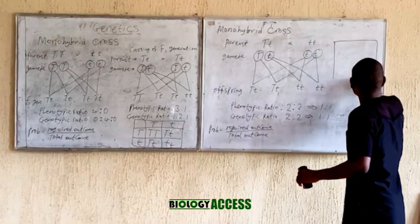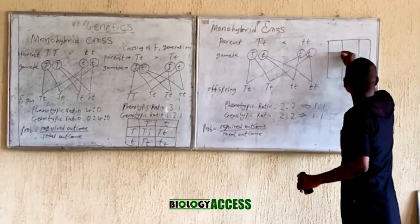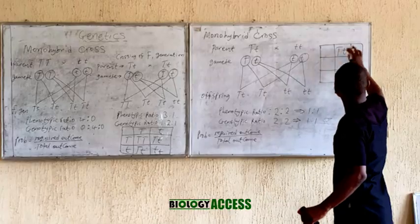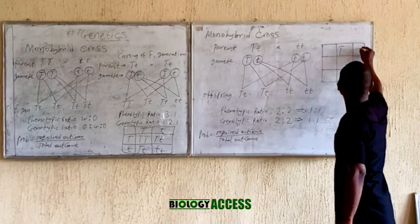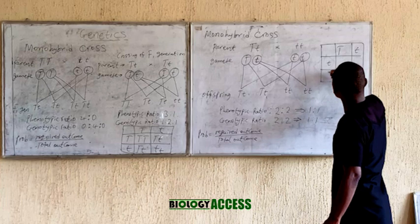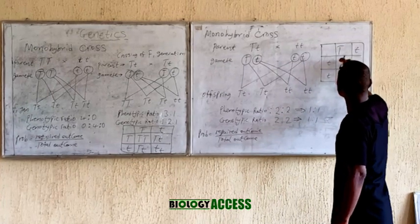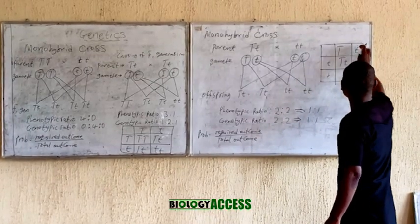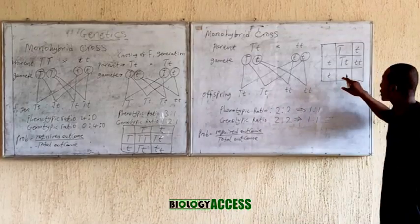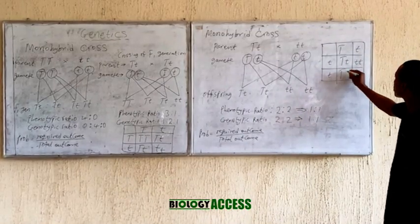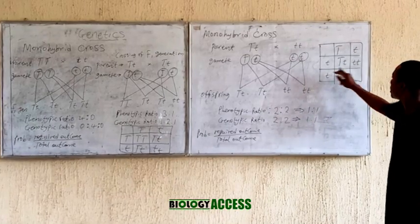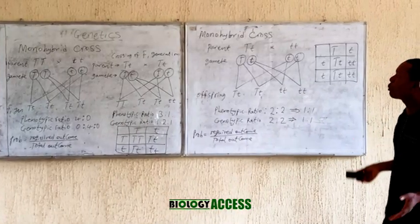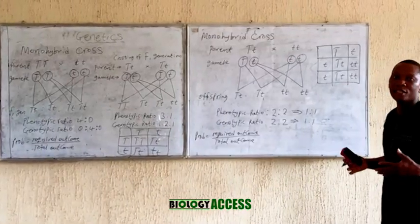You can also use the box method to solve this testcross. You draw your box and place the gametes along the sides. Each gamete on one side connects to each gamete on the other side to give the offspring. Working through all four connections gives you the same answer — confirming the 1:1 ratio. So this is a simple method of carrying out a monohybrid cross in genetics.